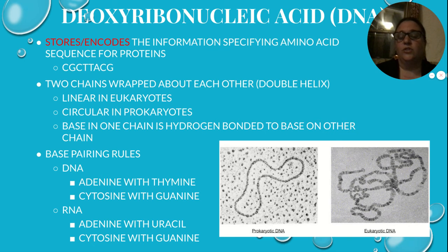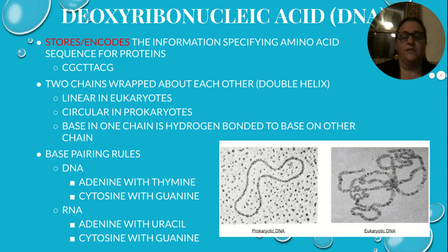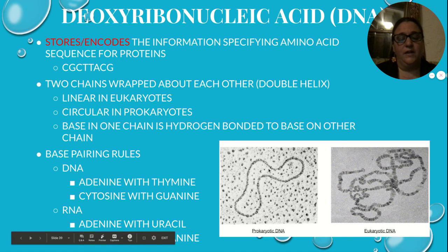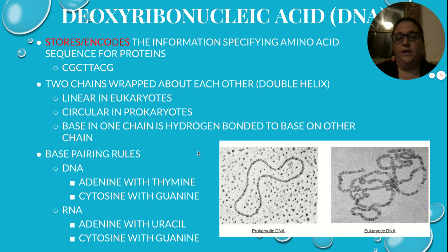DNA has two strands or chains that are wrapped around each other — that's why we call it a double helix. In eukaryotes, it's not looped; it's linear. In prokaryotes — the bacteria — it's a big loop, so we say they have circular DNA.